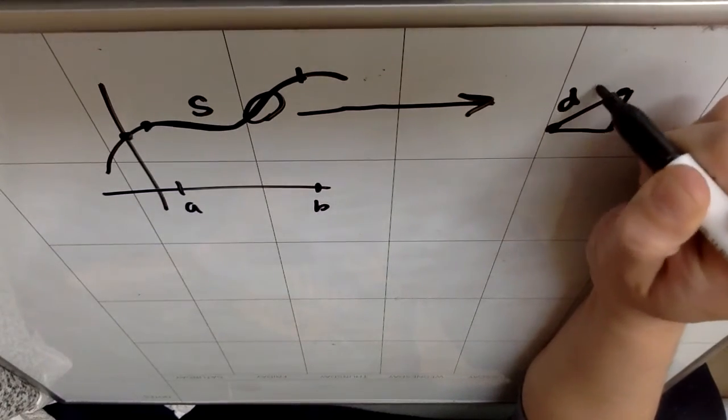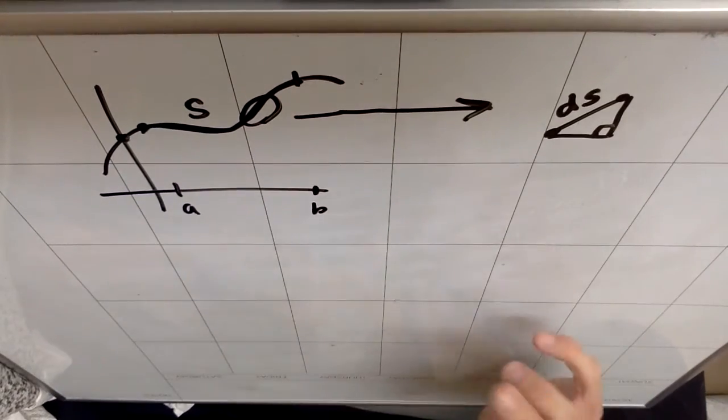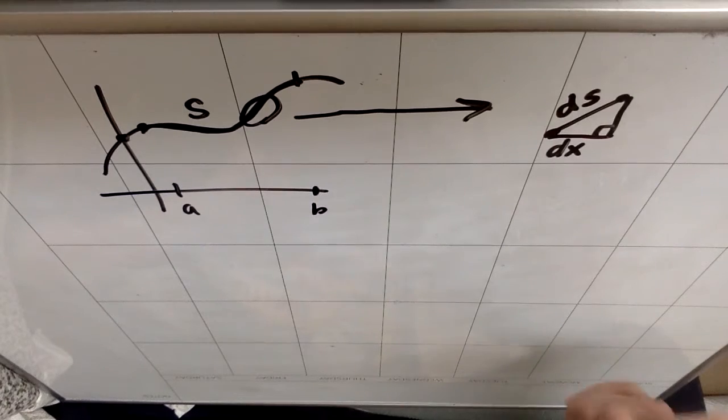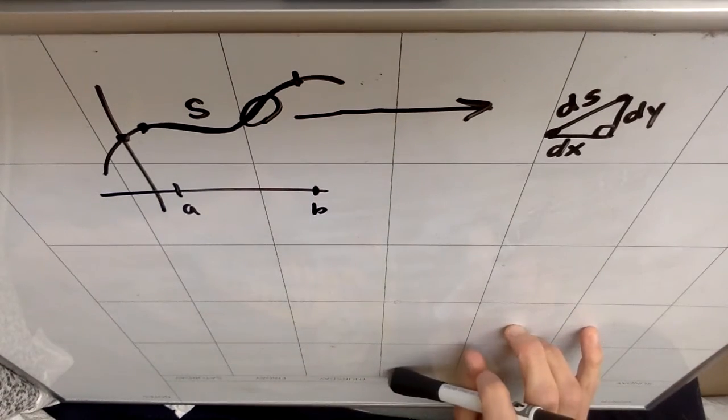we could call that infinitely small section ds for tiny little chunk of arc length, and we would call the tiny little horizontal segment dx for tiny little chunk of x and dy for the tiny little chunk of y.